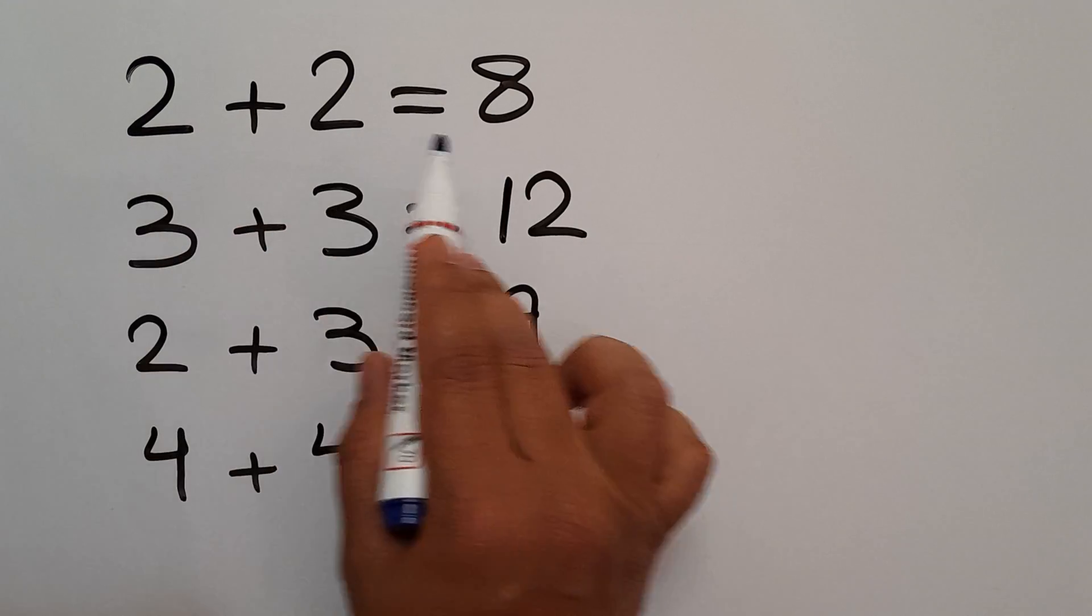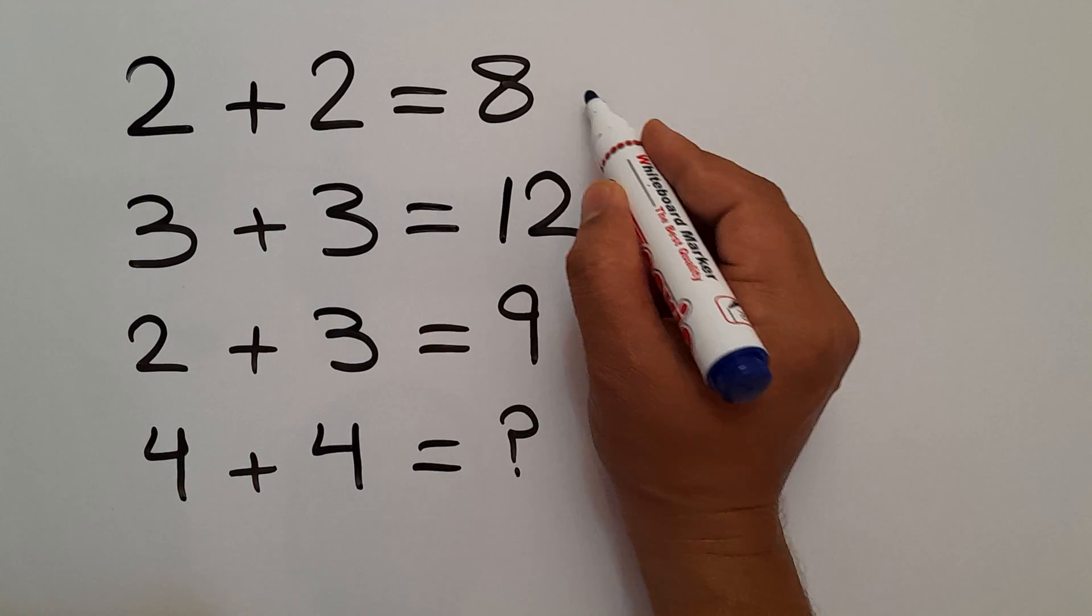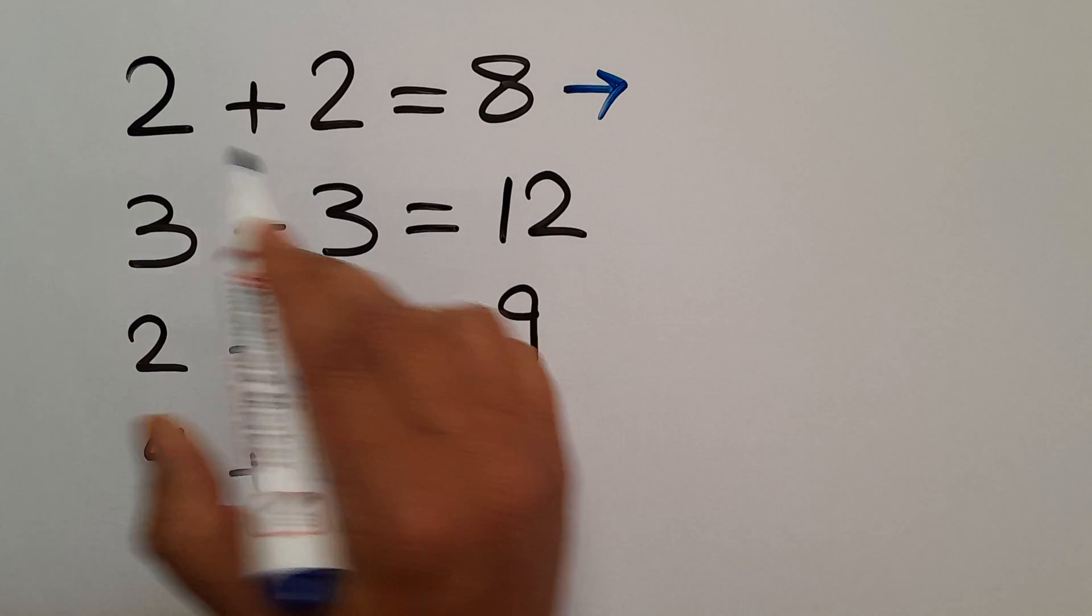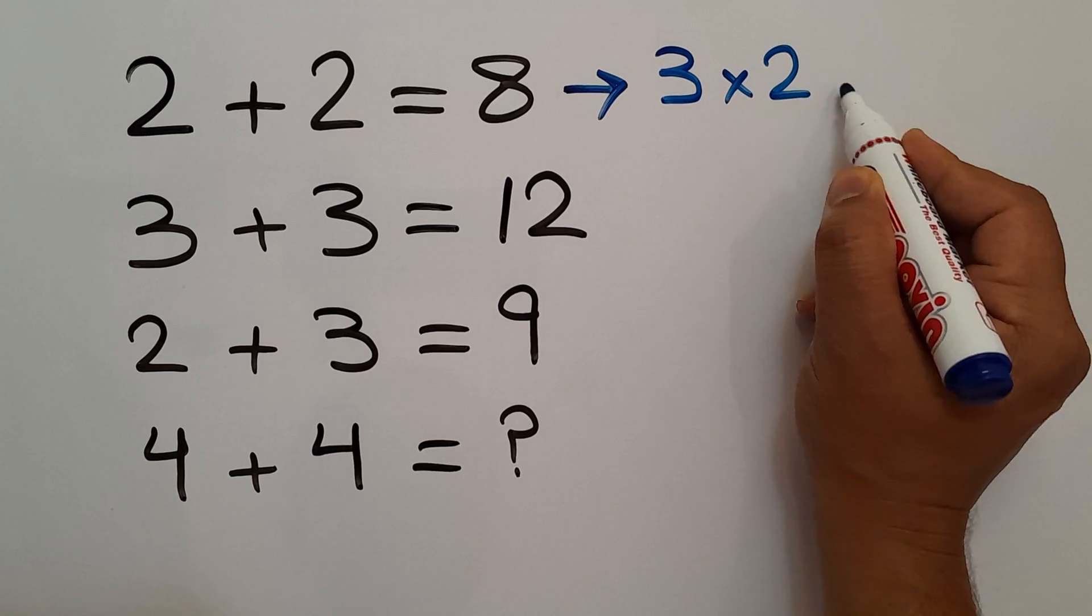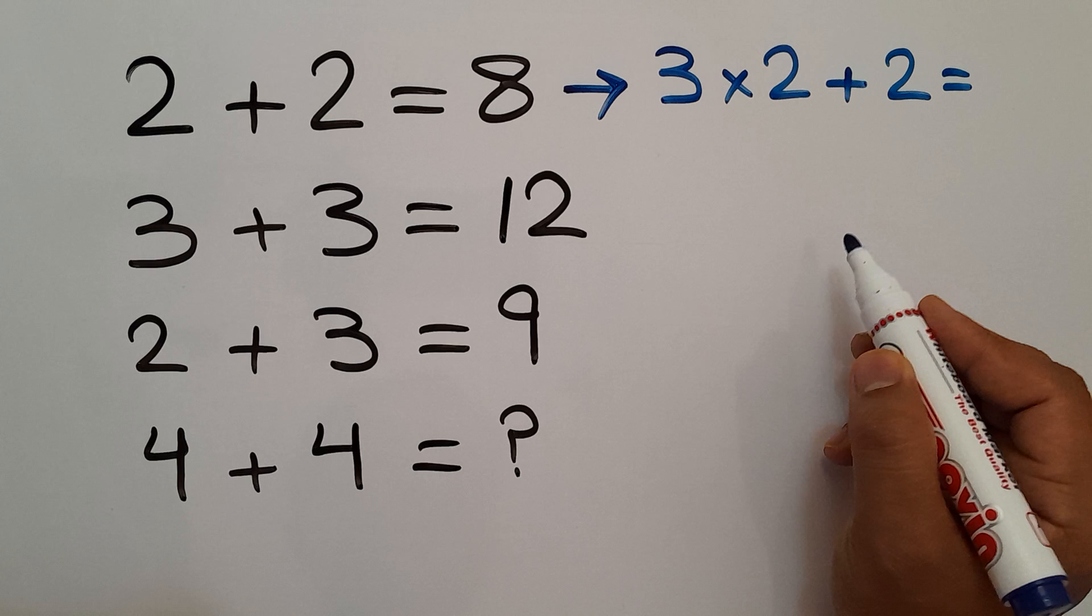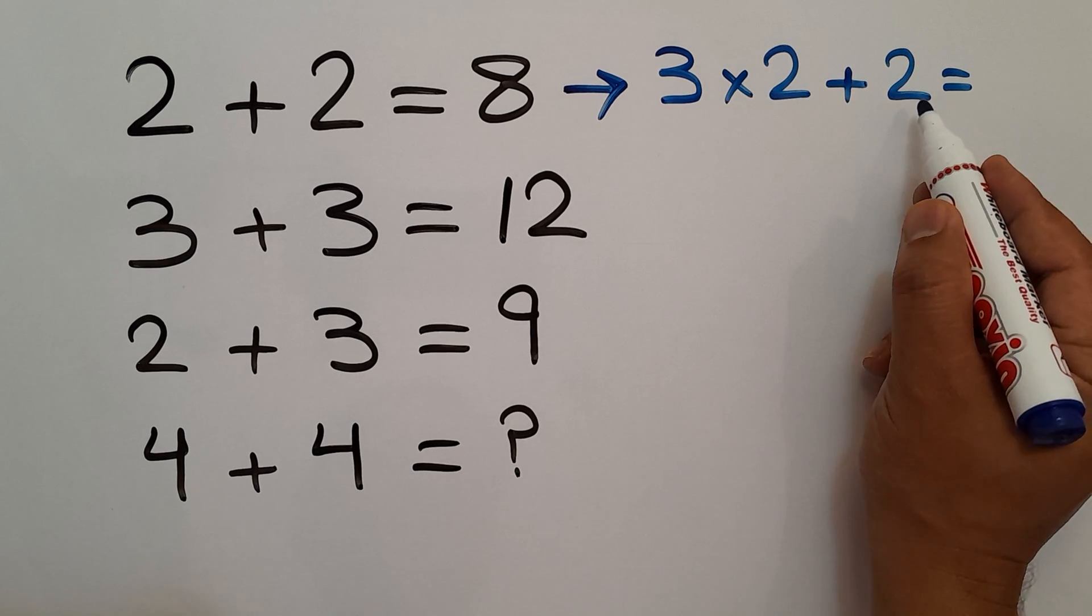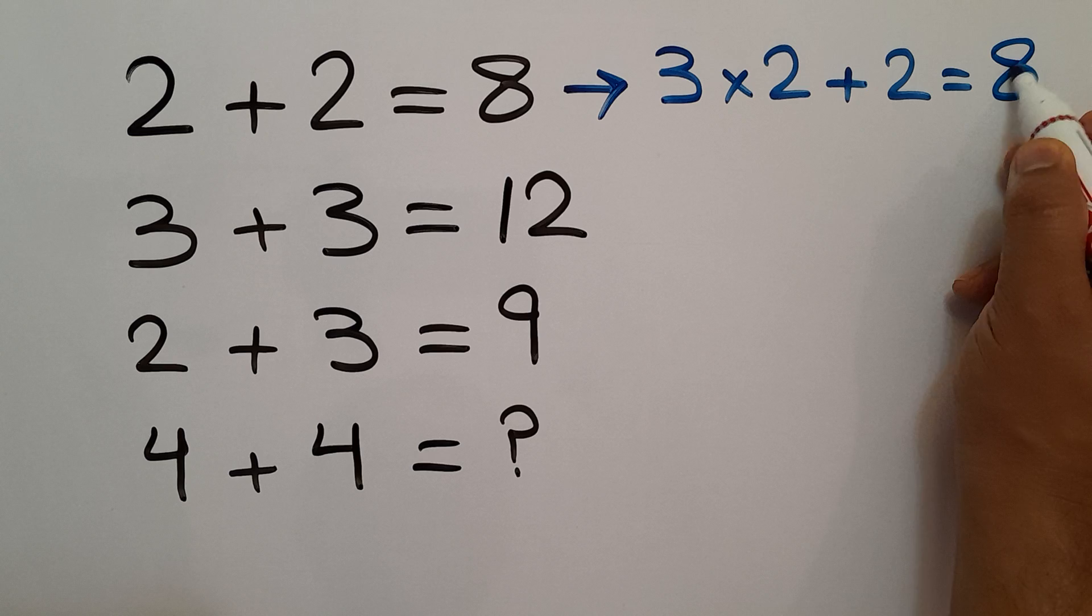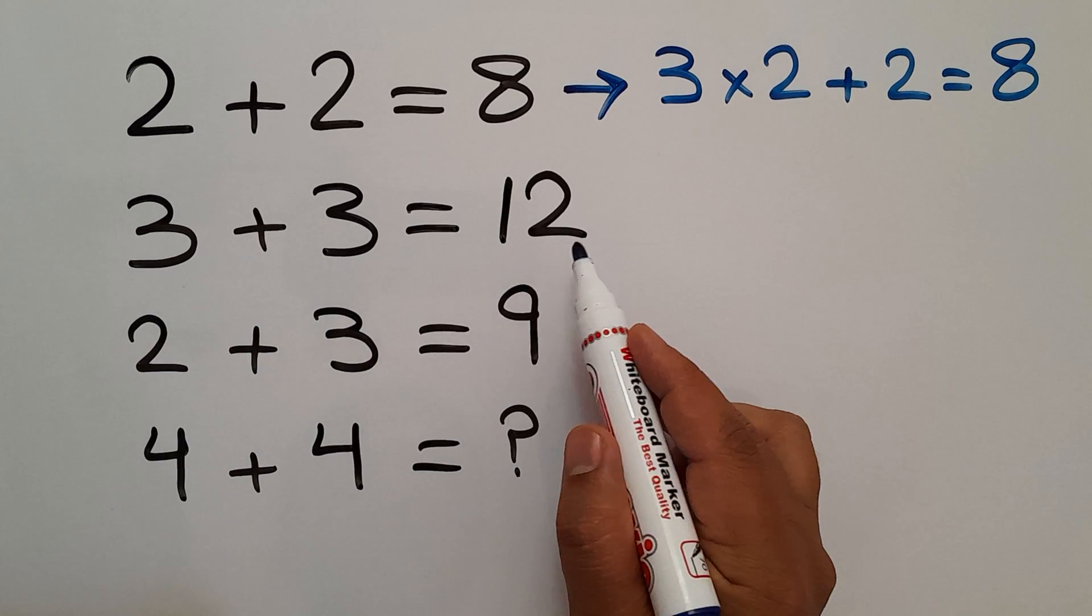In the first line we have 2, 2, and 8. 3 times 2 plus 2 gives us... 3 times 2 is 6, and 6 plus 2 equals 8, the right hand side number.